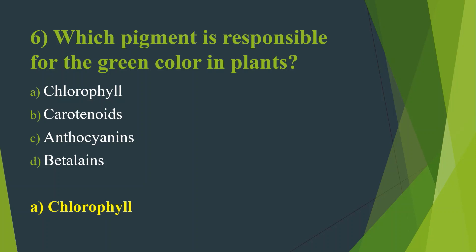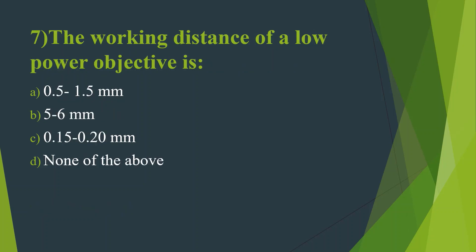Seventh question: The working distance of a low power objective is — Option A, 0.5 to 1.5 mm. Option B, 5 to 6 mm. Option C, 0.15 to 0.20 mm. Option D, None of the above. Answer is Option B, 5 to 6 mm.